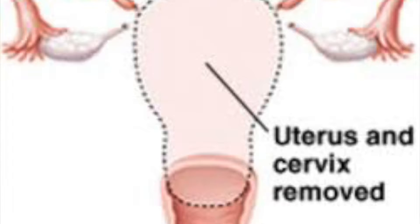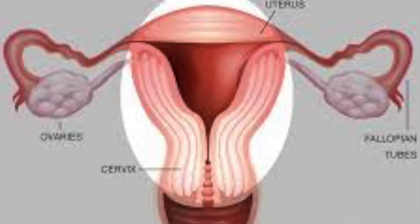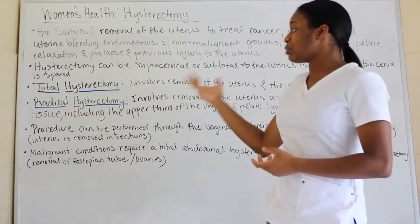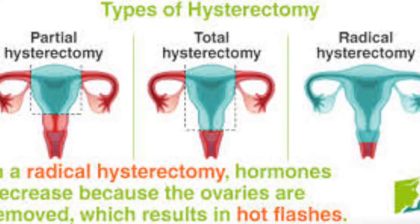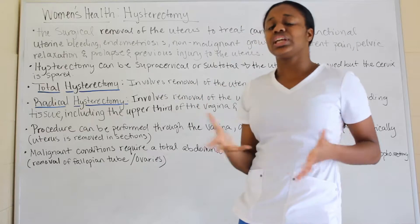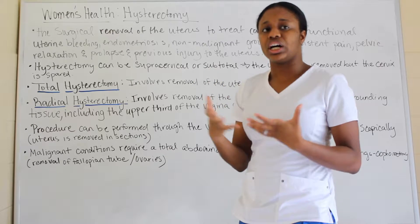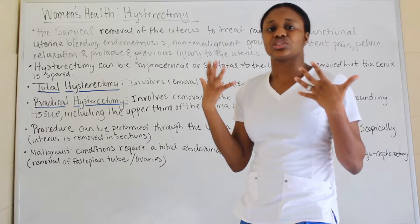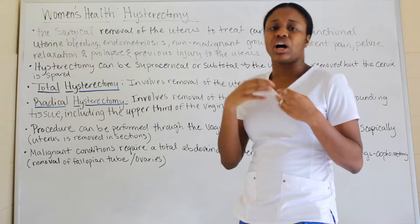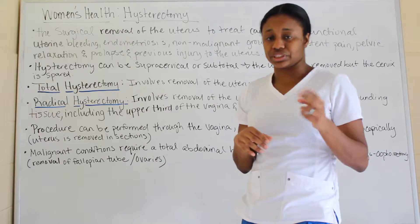A total hysterectomy involves the removal of the uterus and the cervix. A radical hysterectomy involves removal of the uterus as well as the surrounding tissues, including the upper third of the vagina and the pelvic lymph nodes. Total doesn't mean everything — you can think of radical as meaning everything, like when someone does something very extreme.